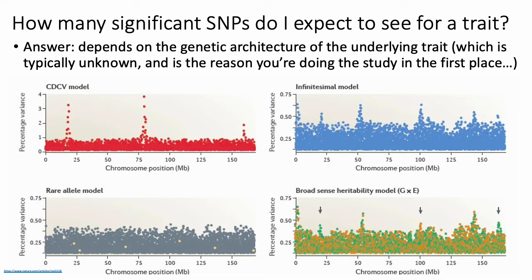One criticism of QQ plots is: how do I know how far from the diagonal the QQ plot should be, since I'm doing this study precisely because I don't know which SNPs are associated with my trait? How many significant SNPs do I expect to see? The answer depends on the genetic architecture of the underlying trait, and people have studied this across many diseases over many years.